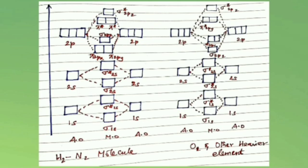For nitrogen and molecules up to nitrogen, pi 2px and pi 2py have energy less than sigma 2pz. On the other hand, for oxygen and other heavier elements, sigma 2pz has energy less than pi 2px and pi 2py.